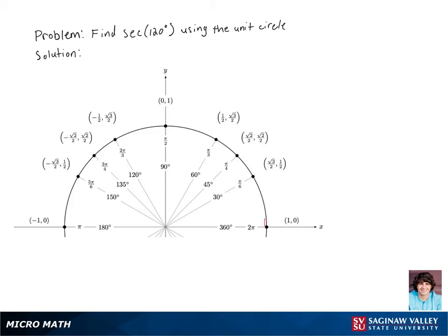Let's find secant of 120 degrees. First, we're going to rotate 120 degrees around our unit circle. Now secant is just 1 over cosine, so secant of 120 degrees is just 1 over negative 1 half.